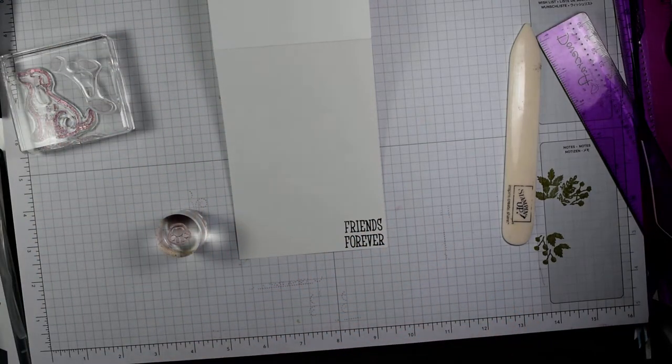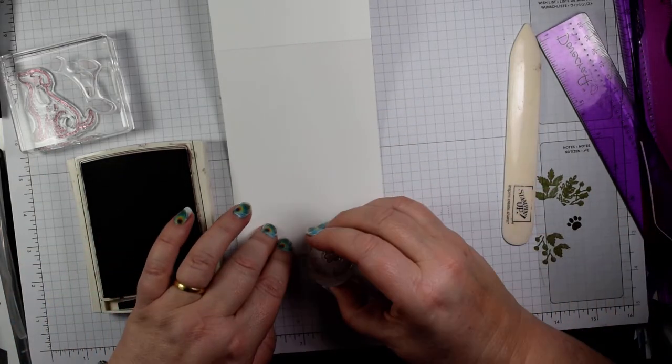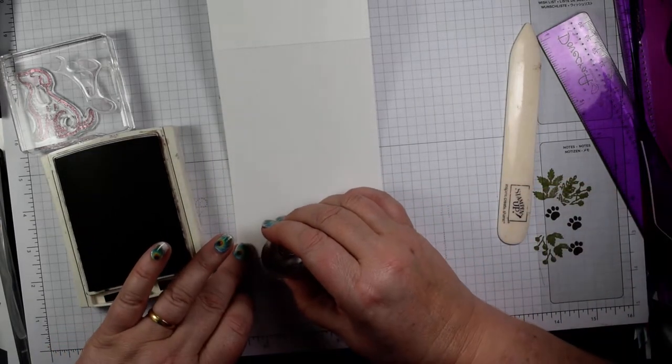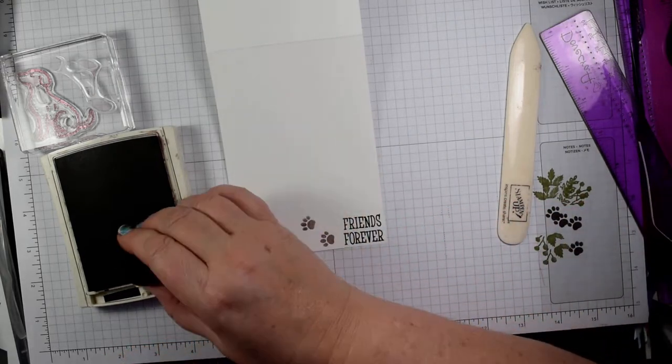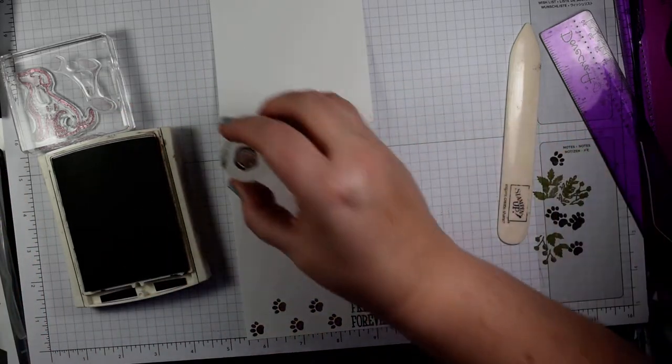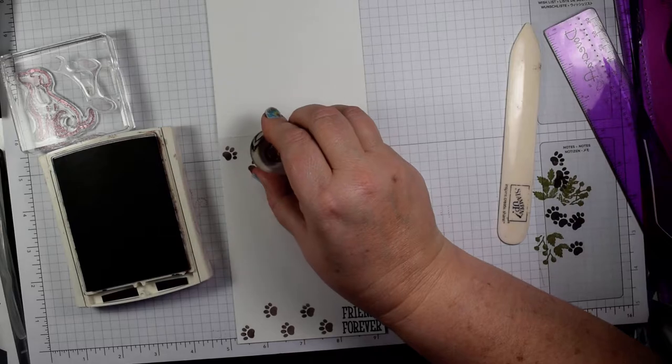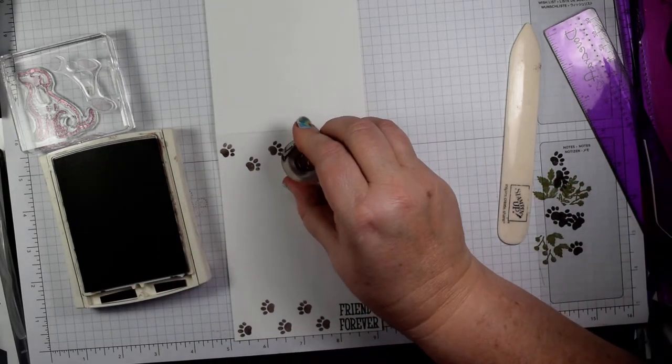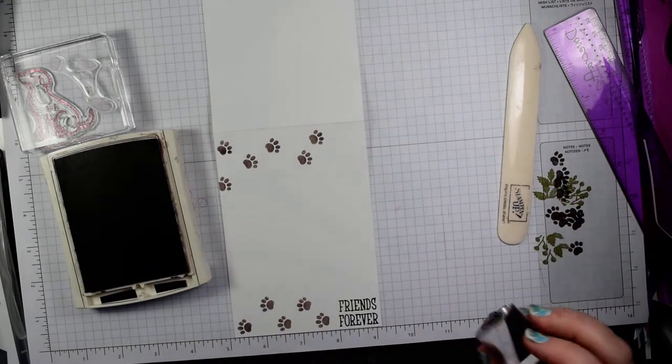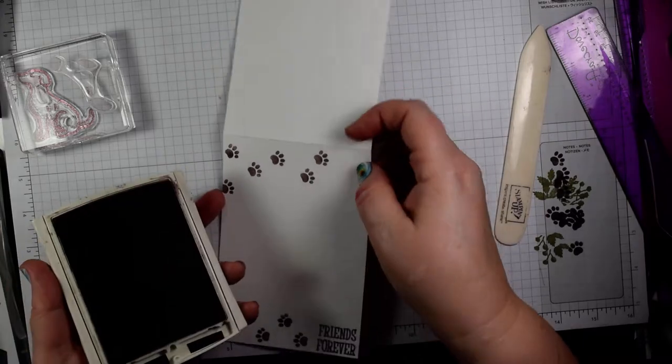Then using Crumb Cake, or you could stamp off and use Early Espresso if that's all the ink you've got. Stamping off is what we do when we want to create a lighter shade of an ink. It's a way of getting double value out of your inks because you're getting two colors. You could stamp off twice and get an even lighter shade. You just do that on scrap paper. That probably looks more like the muddy paw prints I see across my carpet from my dog. So we've created our card front and pop that to one side.